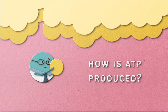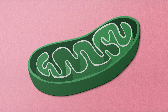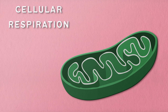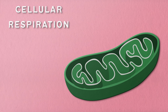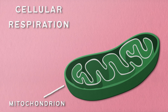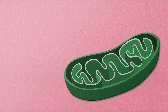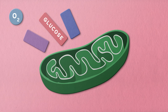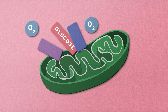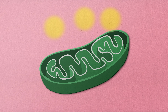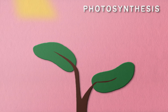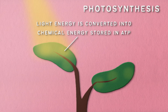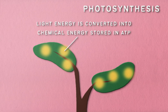So how is ATP produced in the first place? Cells have a few tricks up their sleeves. One major method is through cellular respiration, a process that takes place in the mitochondria, often called the powerhouse of the cell. During cellular respiration, glucose and other molecules are broken down in the presence of oxygen to produce ATP. There's also photosynthesis in plants, where light energy is converted into chemical energy stored in ATP.